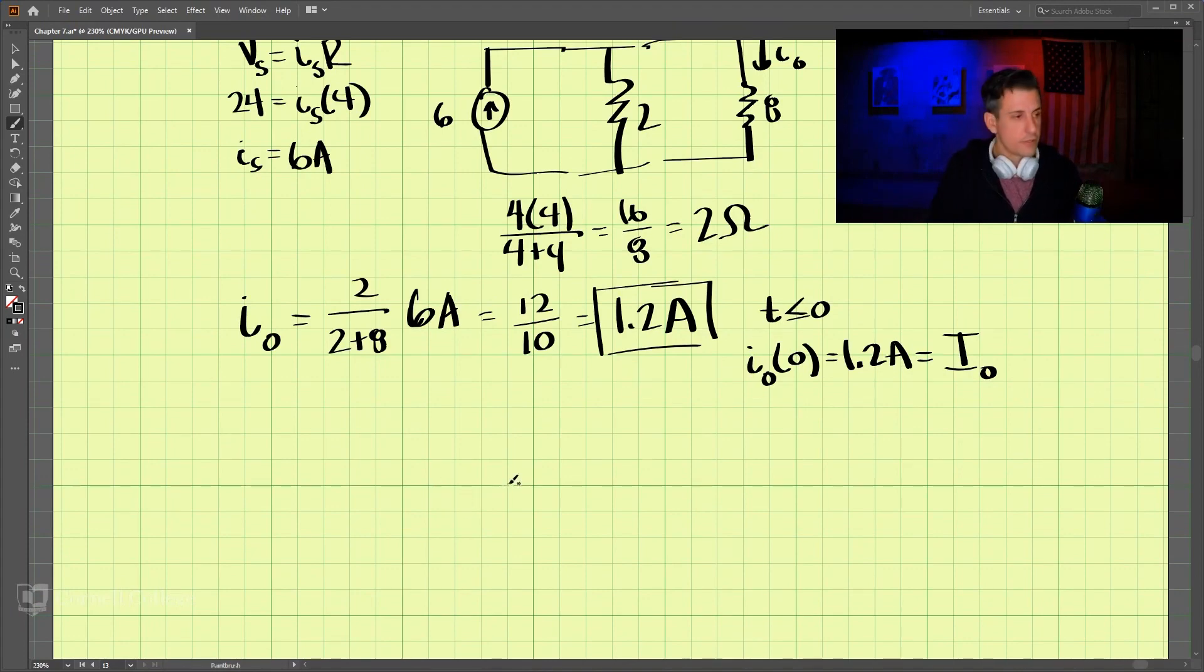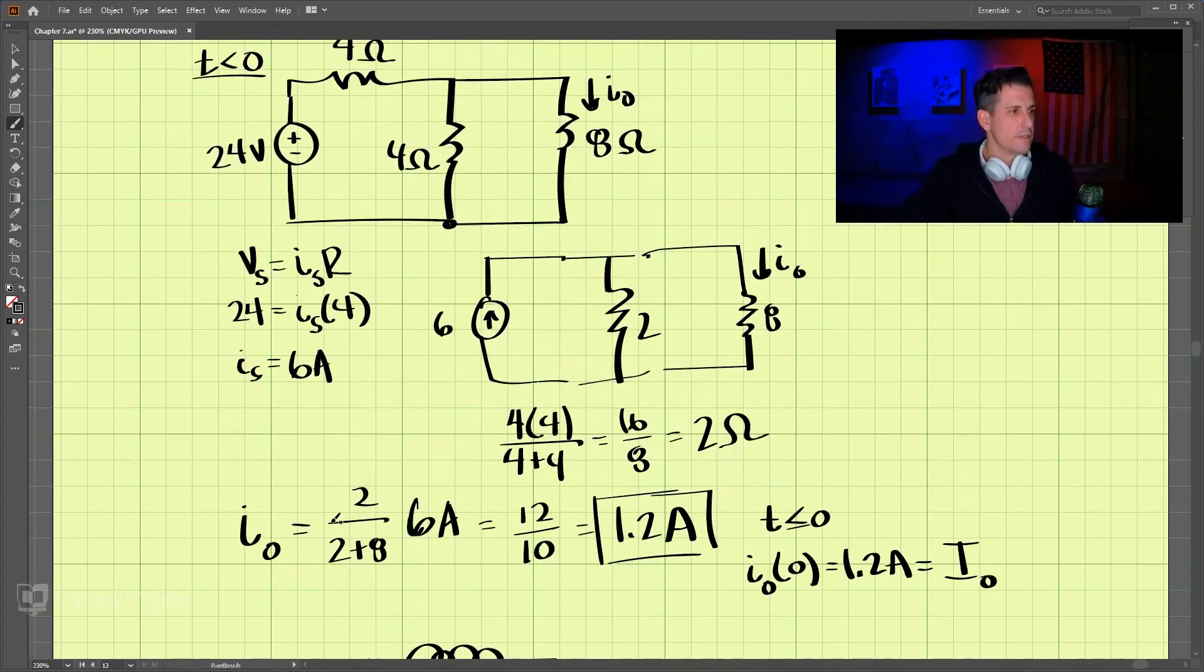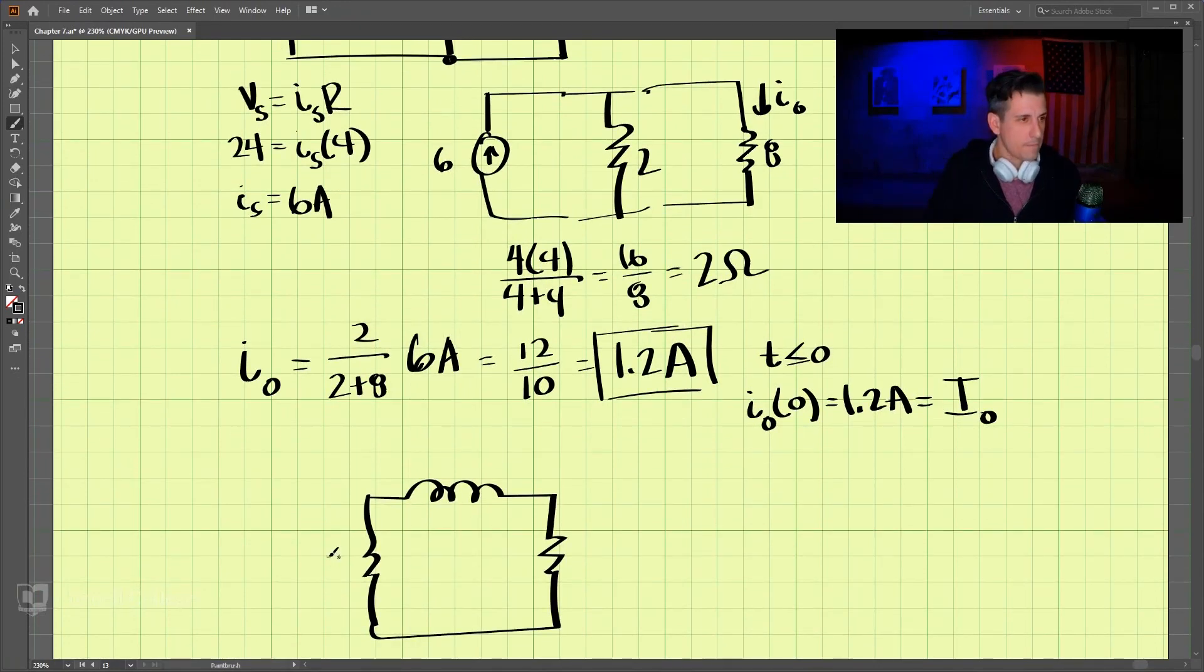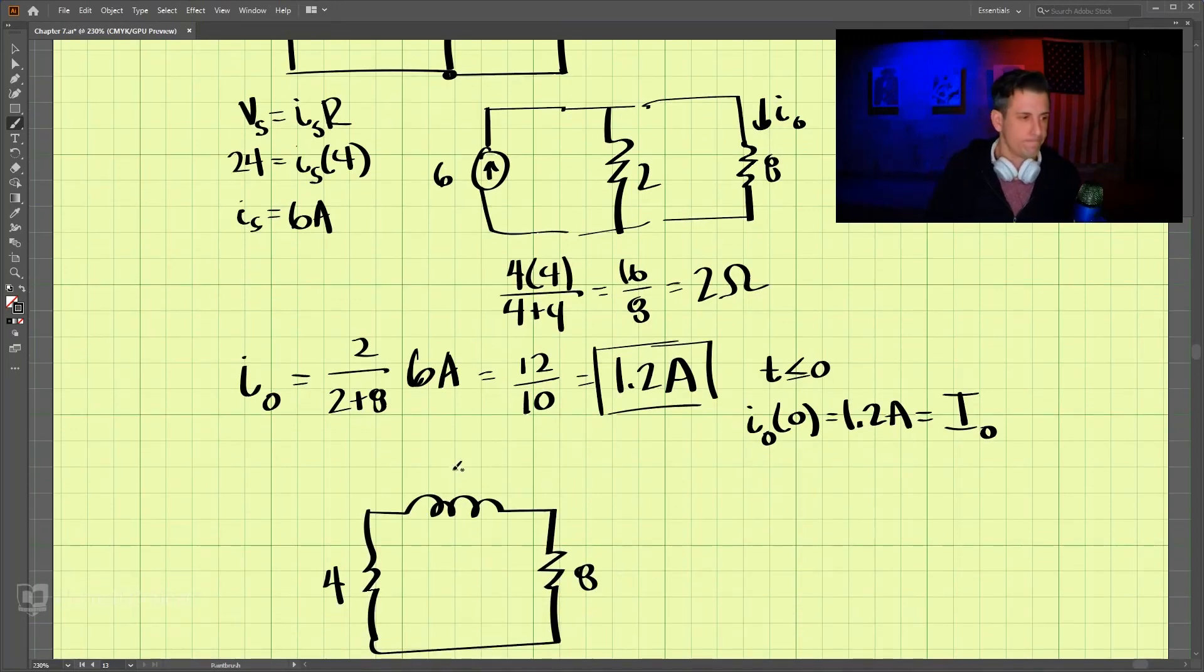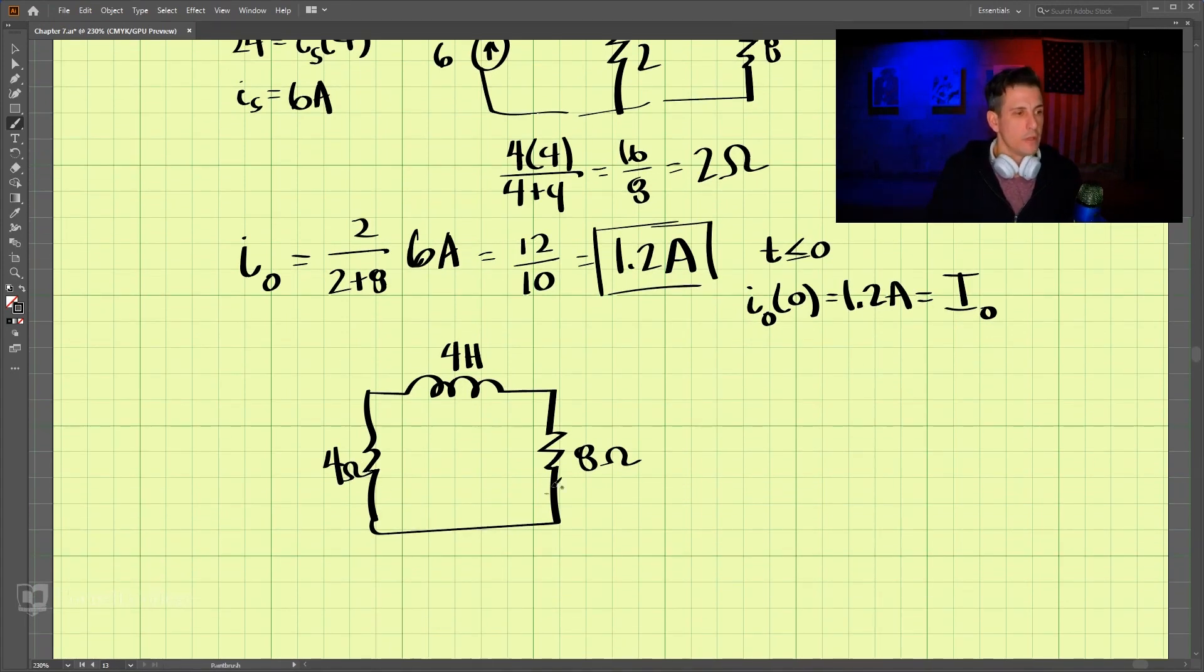So that becomes with our inductor here. So this is, what is that resistance? That's 4 and 8. And this inductor is 4 Henry. 4 Henry, 8 ohms, 4 ohms.